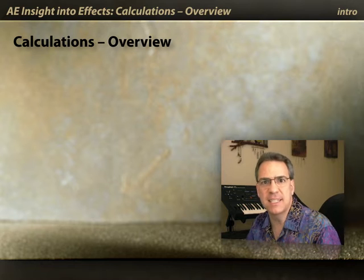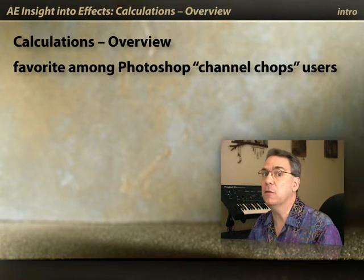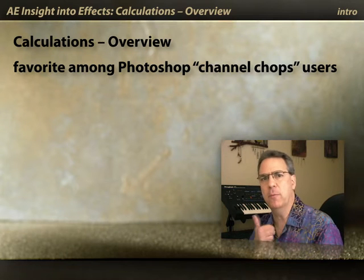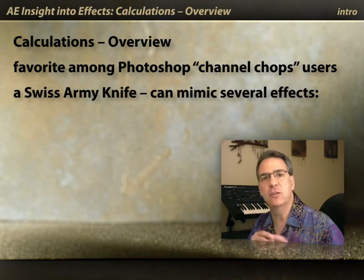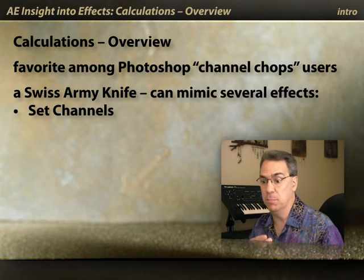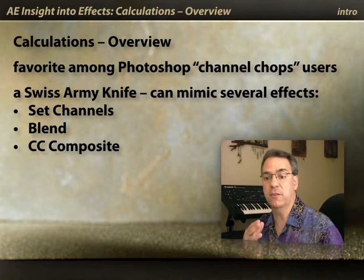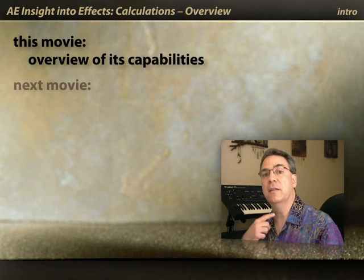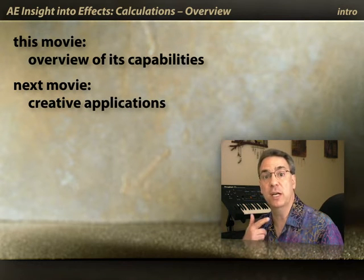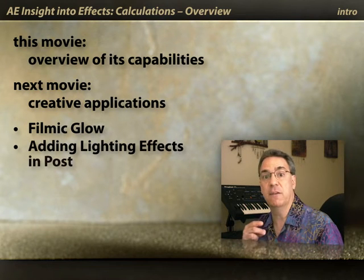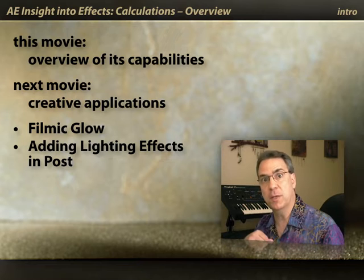Calculations. Sounds really geeky, doesn't it? Well, indeed, some of the geekier Photoshop users out there who like to do channel operations will feel right at home in the calculations plugin. However, you should think of it as your Swiss army knife effect that can do the same thing as set channels, as blend, as CC composite, as many other effects. In this movie, I'll give you an overview of some of the things calculations can do. It's really flexible. And then in the next movie, I'll show you how calculations can help you do creative applications, such as the filmic glow and the adding lighting effects and post tricks that we've shown in other courses. So let's jump in.